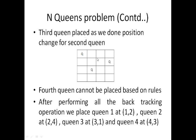Here the 3rd queen is placed based upon the rules. For queen 1: no queen in its row, column, or diagonal. For queen 2: no queen in its column, row, or diagonal. So the only possible location is the 2nd position, and the 3rd queen is placed in the 2nd position.